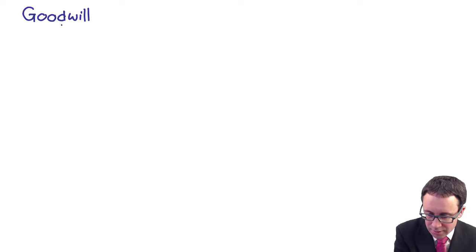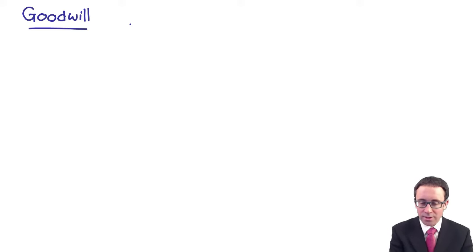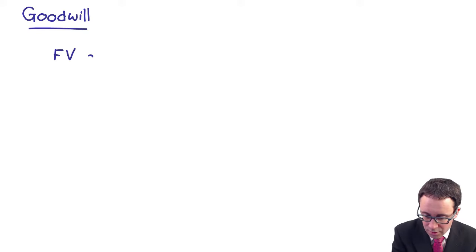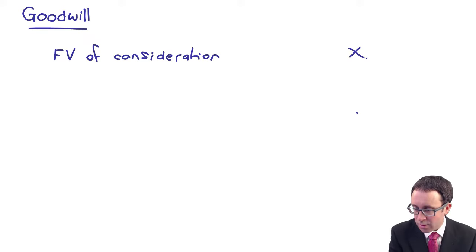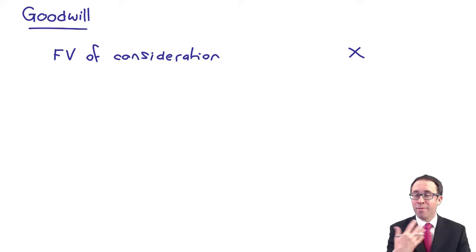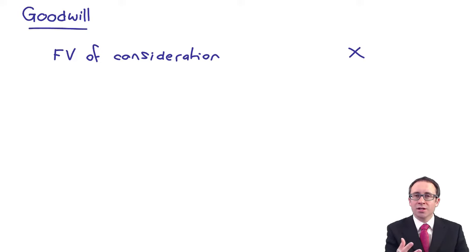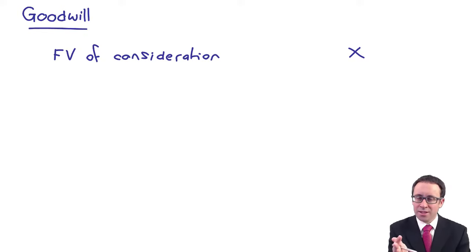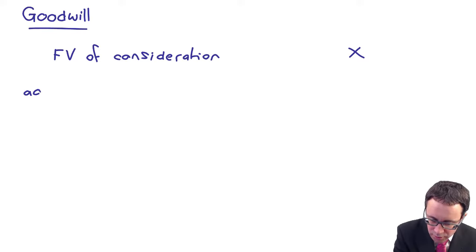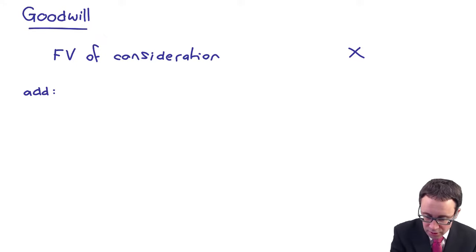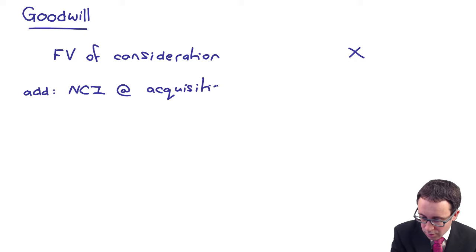How do we calculate goodwill? Under IFRS 3, we look at the fair value of the consideration — effectively at this point, that is what we have paid. There could be other forms of consideration such as the issue of shares, or contingent consideration payable in the future depending upon certain criteria being met. But keeping it simple for now, it's the cash paid. However, that only values the subsidiary based on what we've paid, so we also add in the non-controlling interest at acquisition.